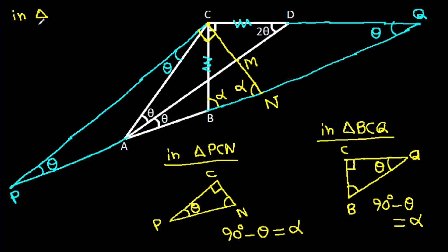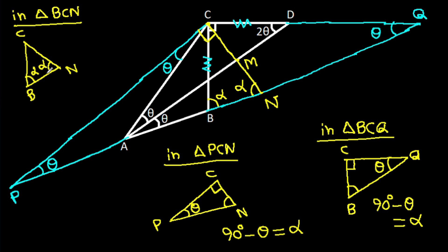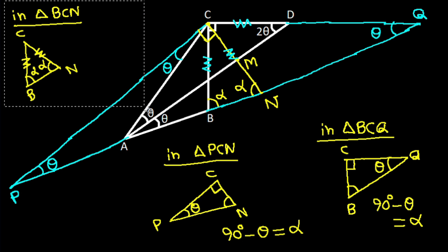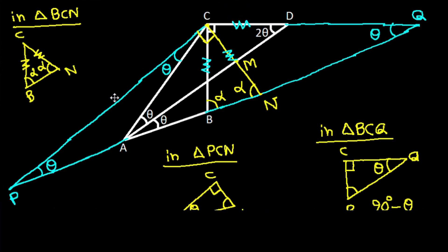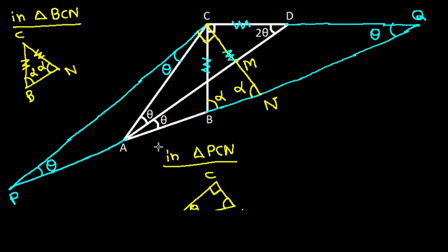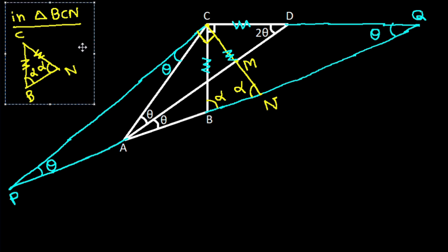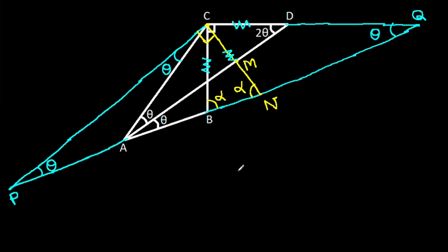Now considering angle BCN: these two angles are equal, that is alpha. So BC will be equal to CN. And considering angle PCN: this angle is 90 degrees and angle PCA is theta, so this angle will be 90 degrees minus theta, that will be alpha.